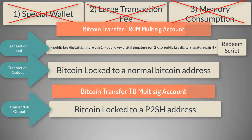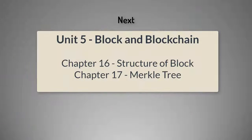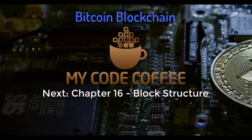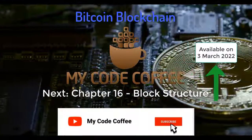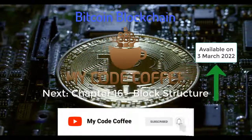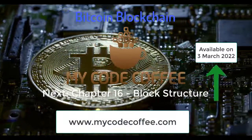As you can see, Pay to Script Hash is a powerful transaction method which solves the complexity of multi-signature. With this chapter, we have finished the unit on transactions. We will now move to the next unit, which will cover chapters related to blocks and their components. Hope you liked this chapter and enjoy MyCodeCoffee. If you want to move to the next chapter, click on the card, and don't forget to subscribe and hit the bell icon. For easy navigation to all chapters, visit MyCodeCoffee.com. Thank you so much for watching.